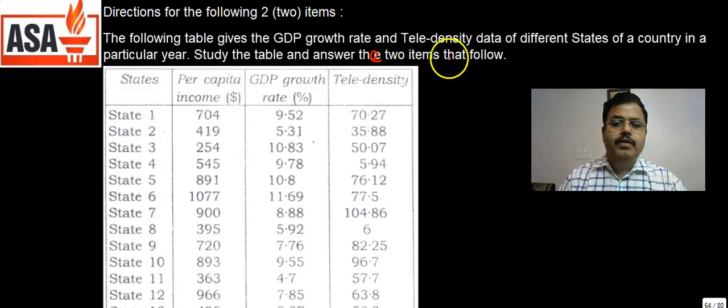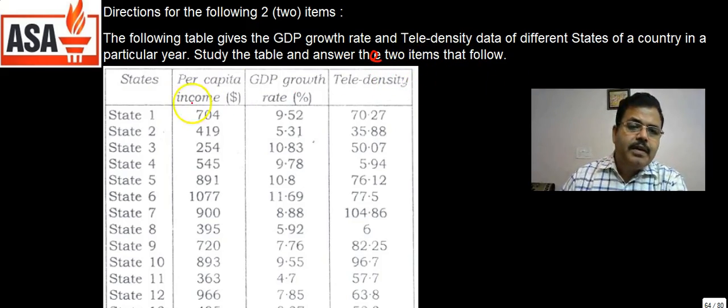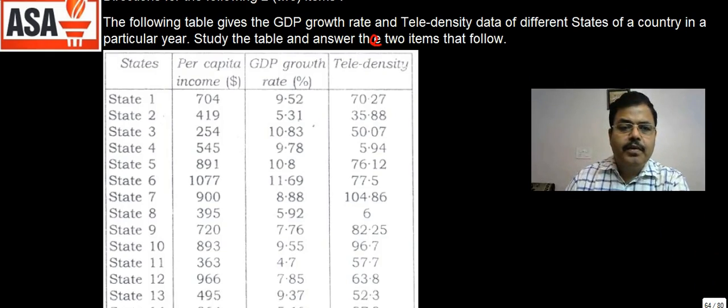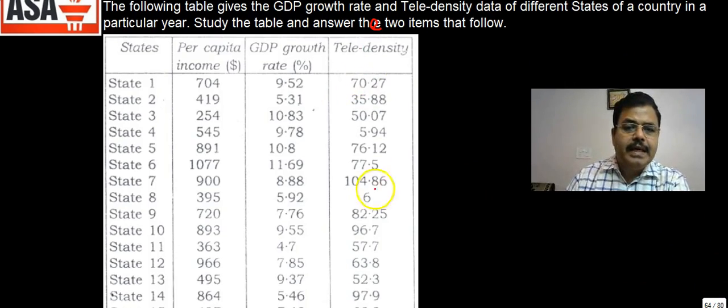Here different states are given, per capita income is also given, GDP growth rate is also given, and tele-density, that is telephone density per thousand, is given here also. So GDP and tele-density is given.